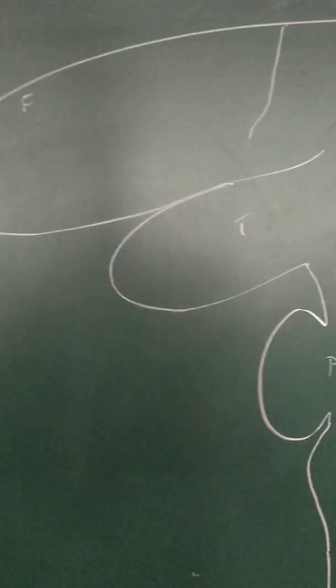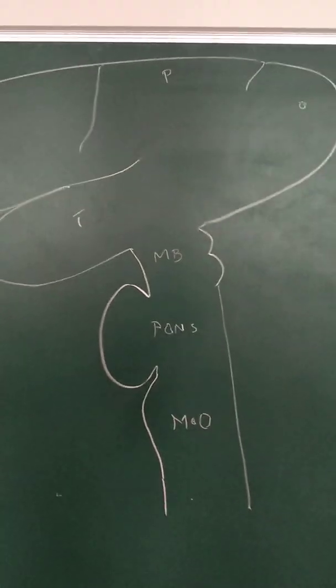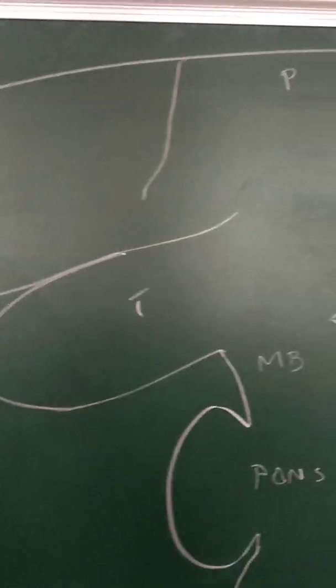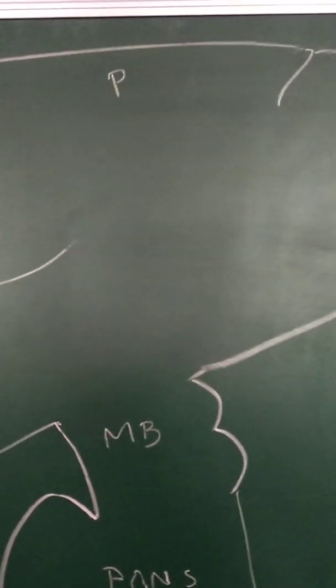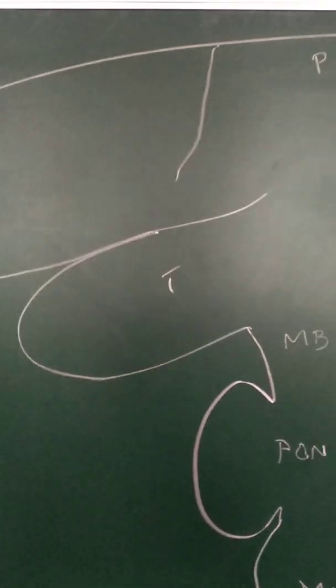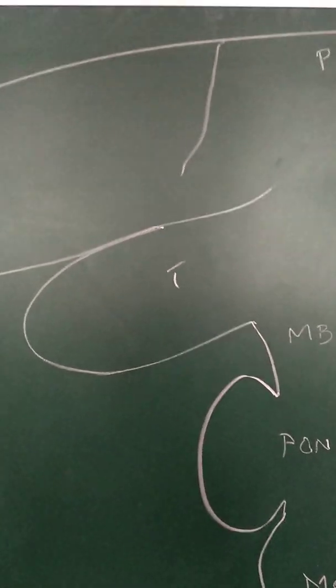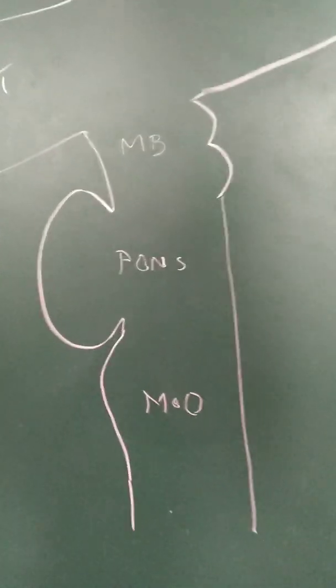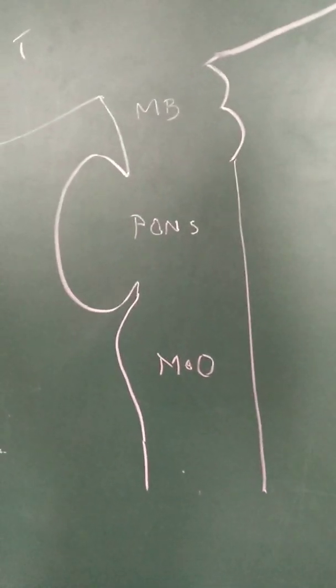This uppermost portion of the brain is called the forebrain or the cerebral hemisphere. It consists of four lobes: the frontal lobe, parietal lobe, occipital lobe, and the temporal lobe. There are two cerebral hemispheres — the right and left. Below the brain is the brain stem.